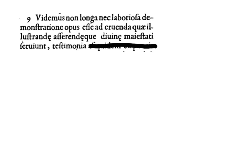Even in this small sentence, or part of a sentence, we see many important grammatical elements. He begins with VIDEMUS, and this in turn introduces a familiar construction, the oratio obliqua, or indirect statement. Remember this has three elements. A verb of perception, which is of course VIDEMUS.